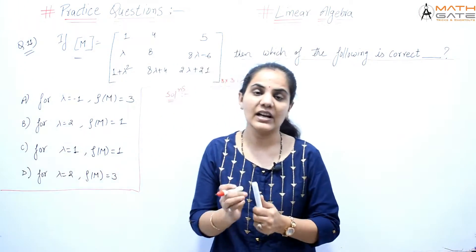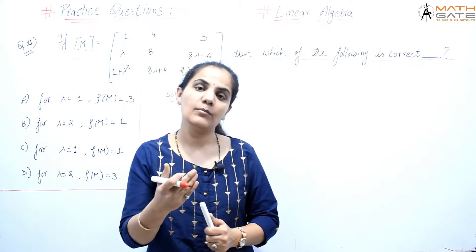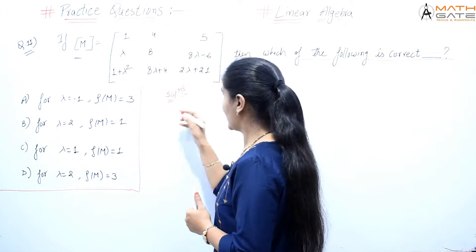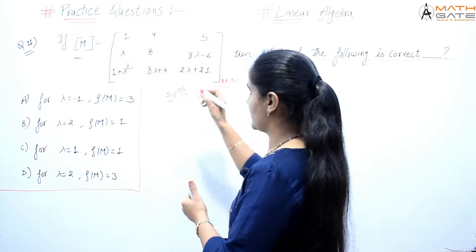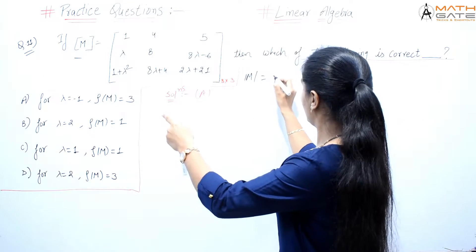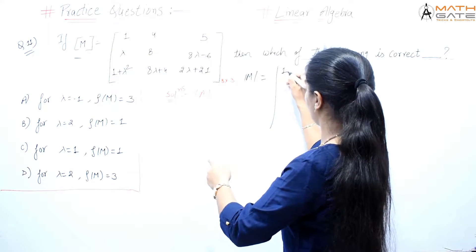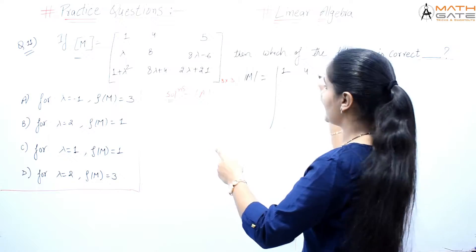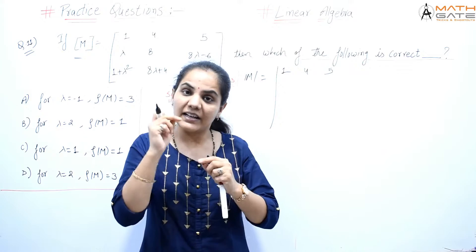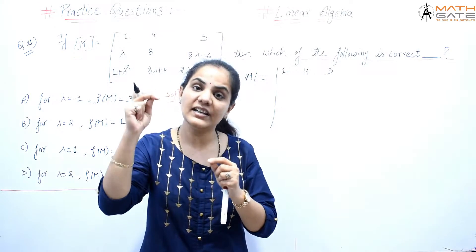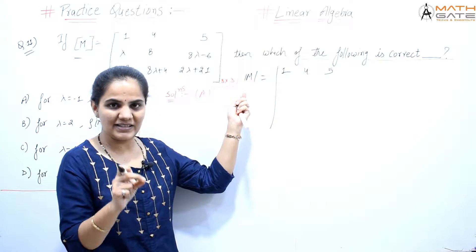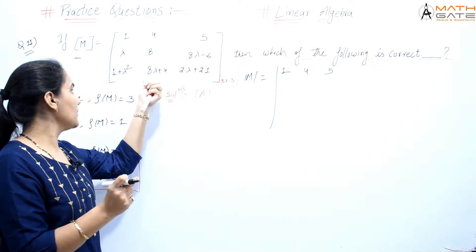This is a good question about the rank of a matrix. We have to keep the lambda value one by one for each option. So let's start with option A. We have a 3x3 matrix M and we need to find the rank by substituting the lambda values and examining the determinant of matrix M.